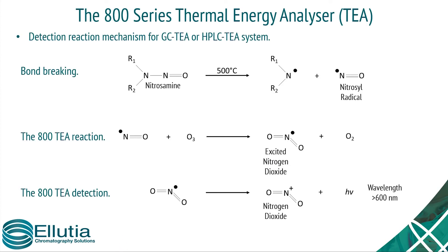This is the generic reaction — the equations for the reactions for the TEA system. The nitrosamine is heated, which releases the nitrosyl radical, which then enters the TEA where it is reacted with ozone to form an excited state of nitrogen dioxide. When the nitrogen dioxide relaxes, it releases a photon of light, and that is what is detected by the TEA.